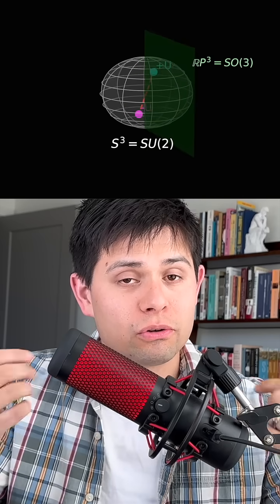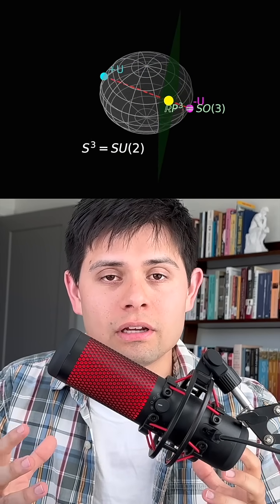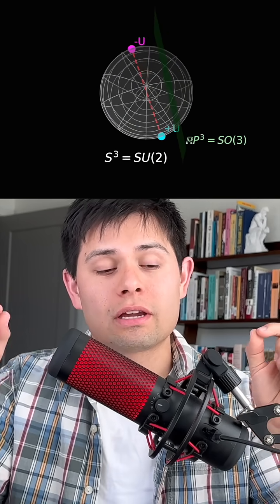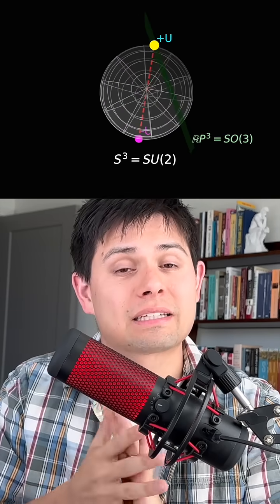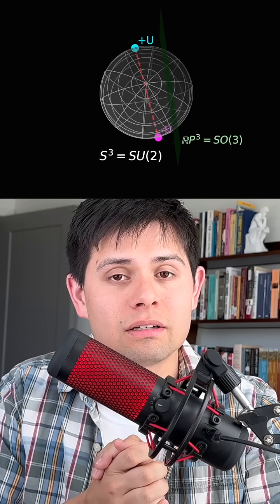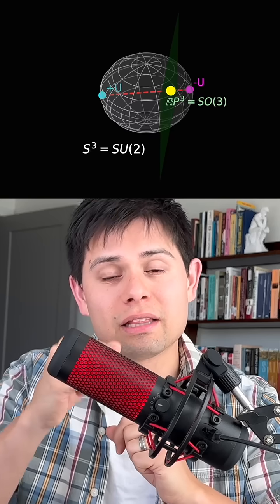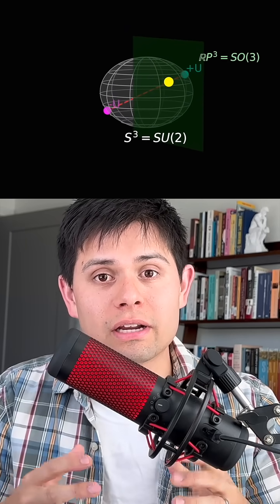This can be seen on the animation here, where the two unitary transformations live on a sphere, and those two unitary transformations get connected by a line, and that line then intersects a bisecting plane. The point at which that line bisects the plane is the point that is regarded as the point that we live in.